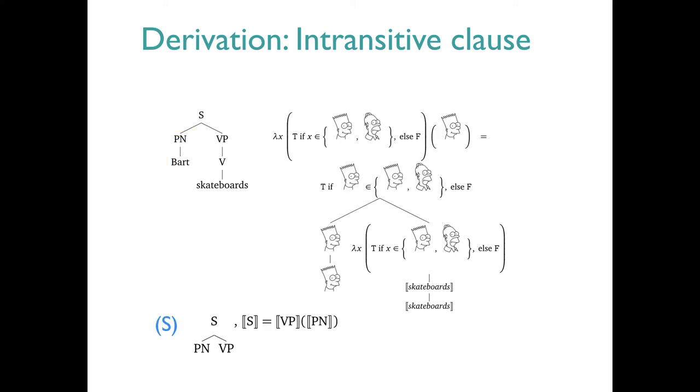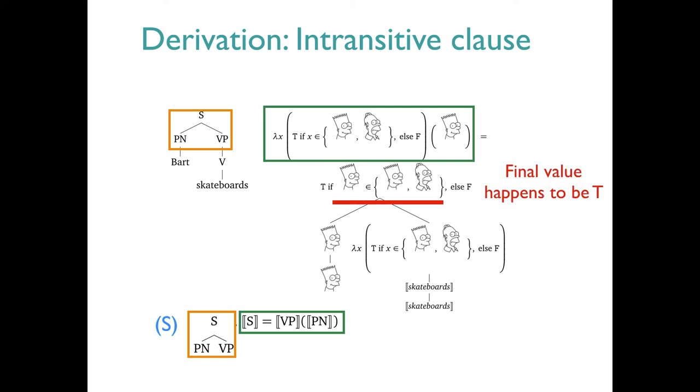Finally, we get to use a new rule, S. The matching is triggered by the S node branching to PN and VP. Notice that we cannot use rule Q2, which requires a QP as its left argument. On the meaning side, the rule says apply the VP meaning to the NP meaning. So we do that. We can further reduce the term by substituting Bart in for X. And that takes us to the final value, which happens to be true.